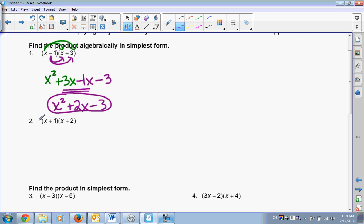Okay, so let's try another. Number 2. What do we distribute first? The x. Okay, so x times x? x squared. X times 2? 2x. Okay. Then distribute the 1. 1 times x? 1x. And 1 times 2? 2. So your two middle terms are like terms. They both have x's. So x squared. 3x. Plus 2. That's it.